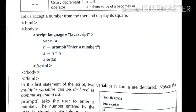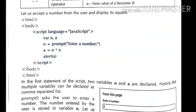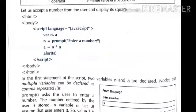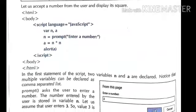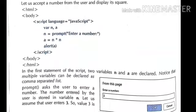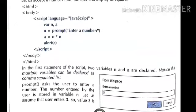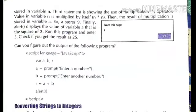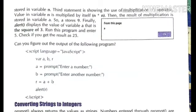To print the value of a, the alert function is used: alert(a), then close script, close body, close HTML. In this example, two variables take user input via the prompt function, calculate a result, and print it using the alert function. The next example uses script language equals to JavaScript.